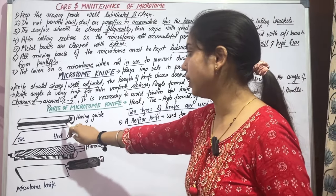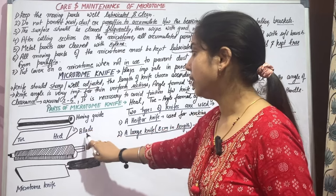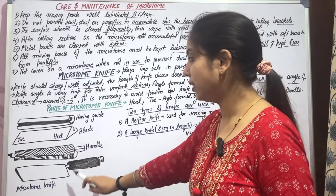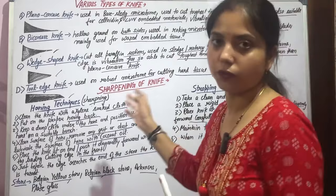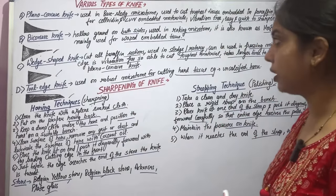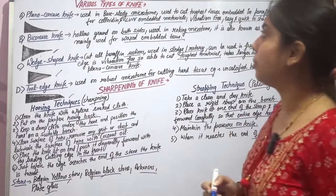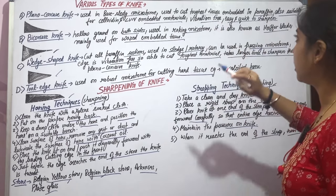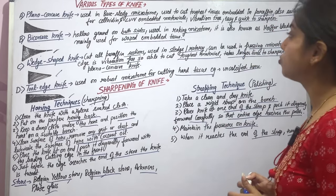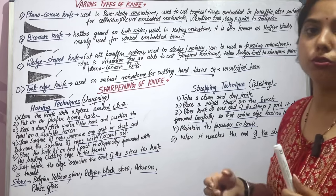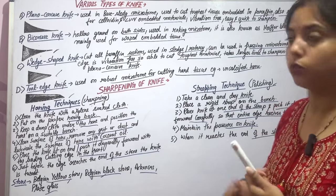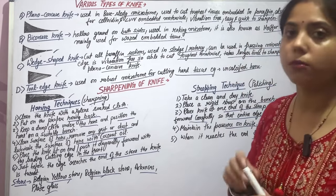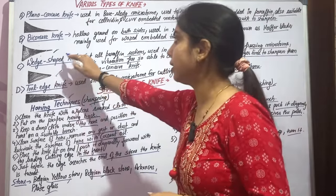Regarding parts of the microtome knife, it consists of a blade, the handle, and associated components. One type of knife is the planoconcave knife, used for the base sledge microtome. It is used to cut the toughest tissue embedded in paraffin and is also suitable for celloidin or LVN embedded material.